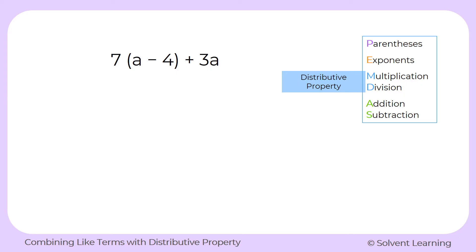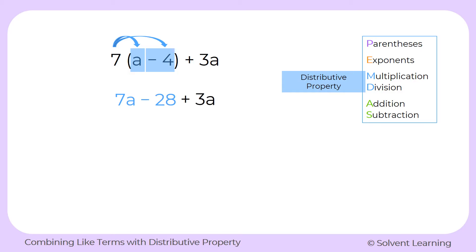That's why we can do it during our multiplication step of the order of operations. We take the number that's on the outside of the parentheses and multiply it by each thing on the inside. So first, we'll start by multiplying 7 times a, which we can just write as 7a. Now we multiply 7 times minus 4, which gives us minus 28. So that first part just becomes 7a minus 28. And we can't forget our plus 3a, so we'll just bring that on down.